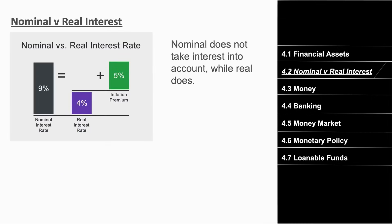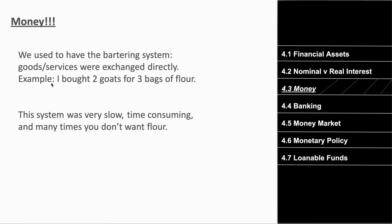Just like nominal versus real GDP, the same distinction applies to interest rates. The nominal interest rate is the total interest rate — here it's nine percent. The real interest rate accounts for inflation: if nominal is nine percent and inflation is five percent, nine minus five gives us four percent as the real interest rate.